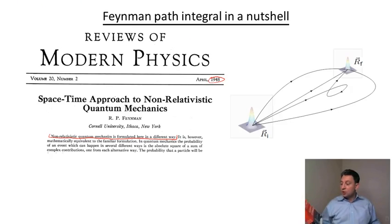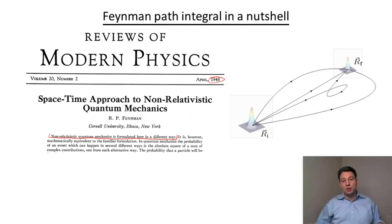It's called Perfectly Reasonable Deviations from the Beaten Track. So this book is really, there is no shortage of books about Feynman, but this book is pretty much a collection of letters that Feynman wrote throughout his life. And when you read this book,